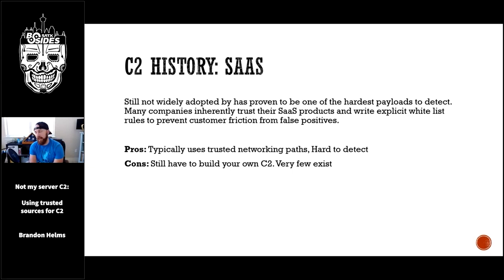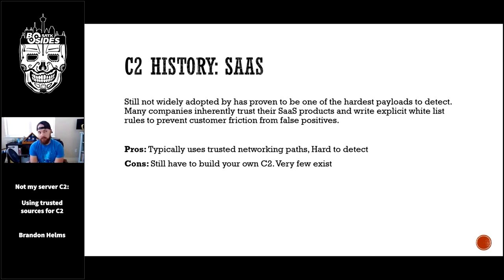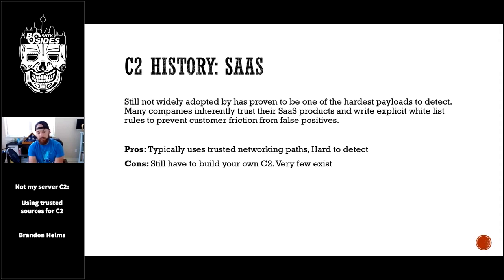There was a big initiative about six or seven years ago to route C2 traffic through Facebook, Twitter, and other social media. There was a lot of interest but it never really took off. A lot of the reasons it never took off in a first-class fashion: corporations at that time already blocked social media for the most part. Even now in 2020, it's still a very easy mechanism for them to detect if they decide they want to detect it.